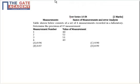Hello students, this question is taken from test series 10, from the subject measurements, from the topic basics of measurement and error analysis, and it is a two marks question. In the given question, the table shown below consists of a set of four measurements recorded in a laboratory. We have to determine the precision of the measurement — that is, we have to find the value of precision of the measurement that is 51.